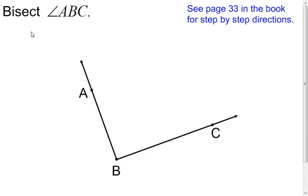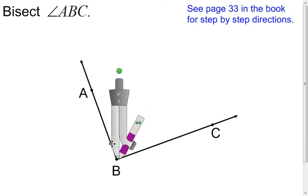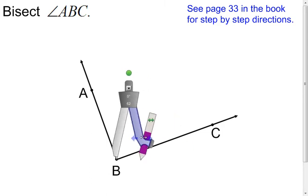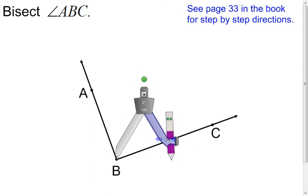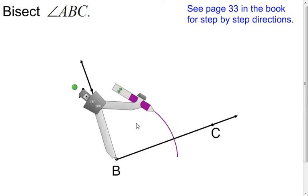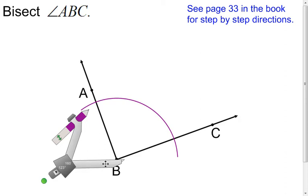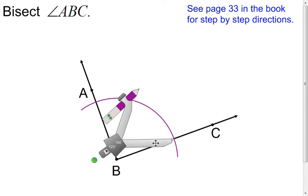My next one is to bisect an angle. Put the point of the compass at the vertex of your angle, and open it up — bigger is usually better, but not too small either. Make an arc that crosses both sides of the angle, creating two intersection points. Now take your compass and put the point at one of those intersection points, and make an arc.